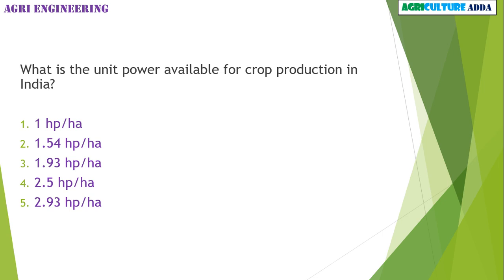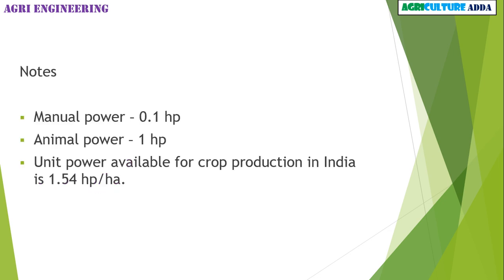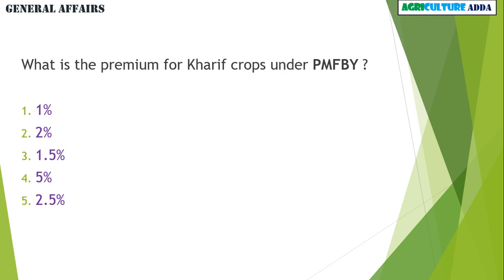Next question: what is the unit power available for crop production in India? Options are 1 hp/ha, 1.54 hp/ha, 1.93 hp/ha, 2.5 hp/ha, or 2.93 hp/ha. The answer is 1.54 hp/ha. Manual power is 0.1 hp, animal power is 1 hp, and the unit power available for crop production in India is 1.54 hp per hectare.